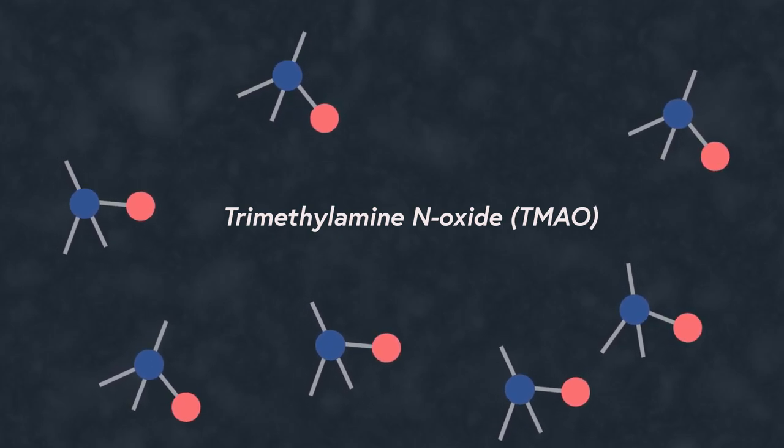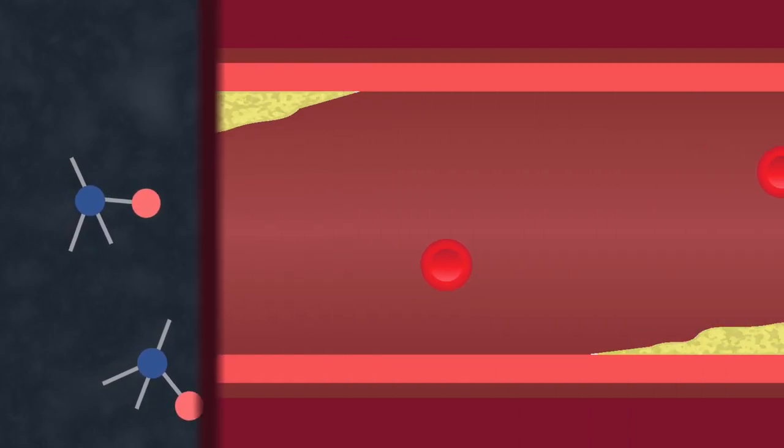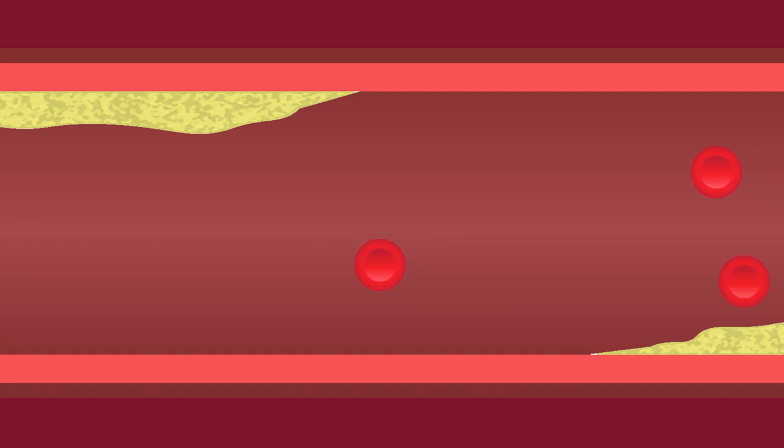TMAO is formed from the metabolism of certain nutrients in red meat products like beef, pork, and mutton. Research has been conducted to show that TMAO helps build up cholesterol on arterial walls, in addition to disrupting normal clotting mechanisms that increase the risk of heart attack and stroke.